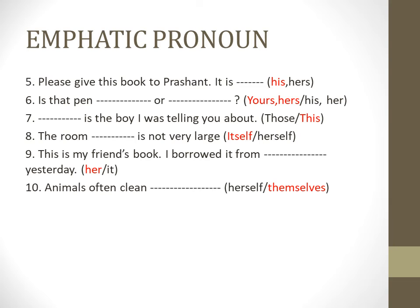The eighth question: the room dash is not very large. The room itself is not very large. Very good. We cannot say 'herself' because the room does not have any life in itself. That's why we say 'itself.' Instead of saying himself or herself — those are talking about people — here it is talking about a non-living being, so you say 'itself.'